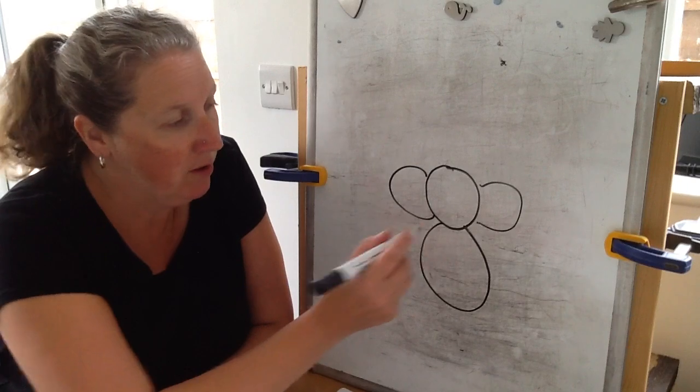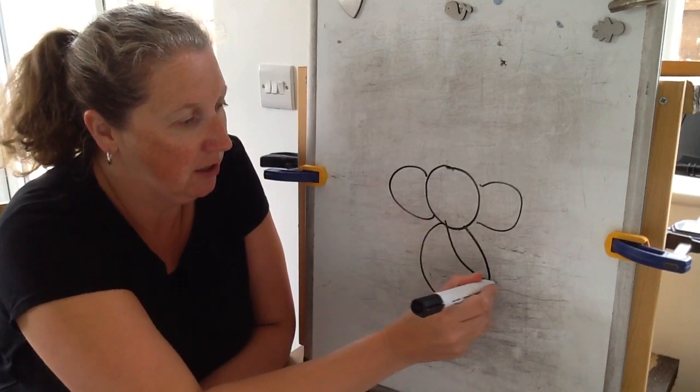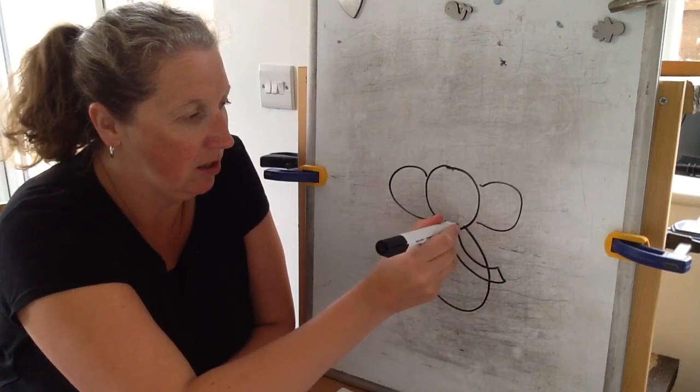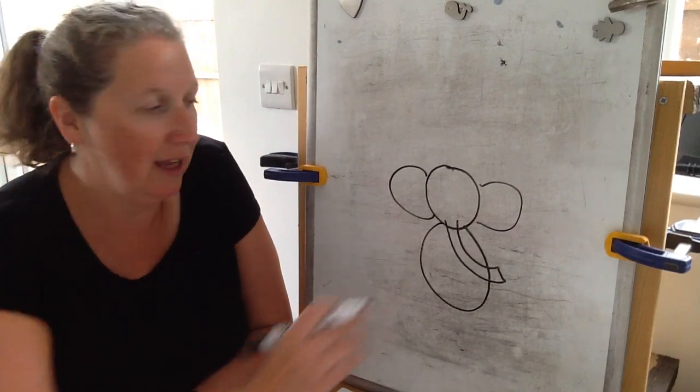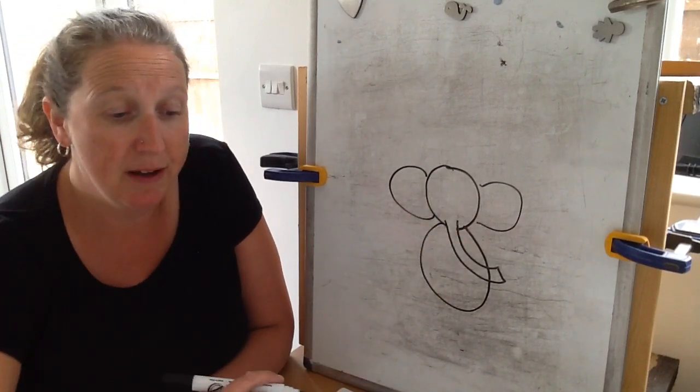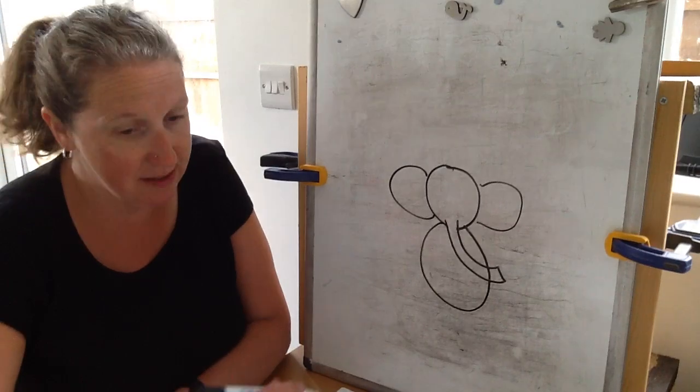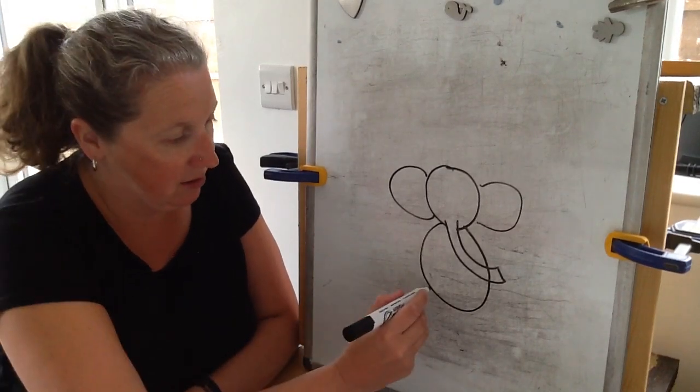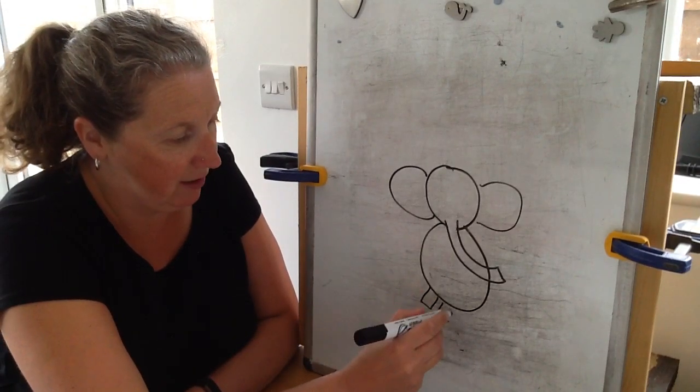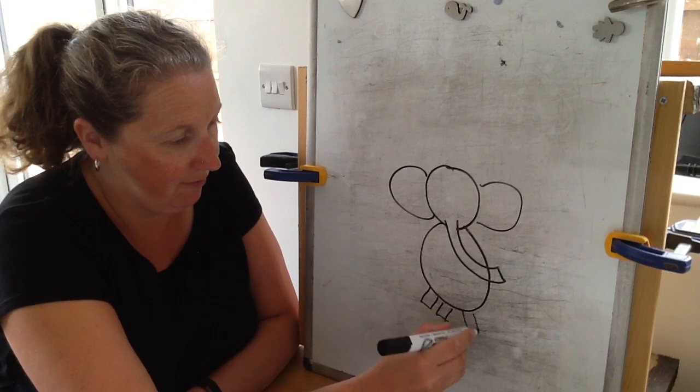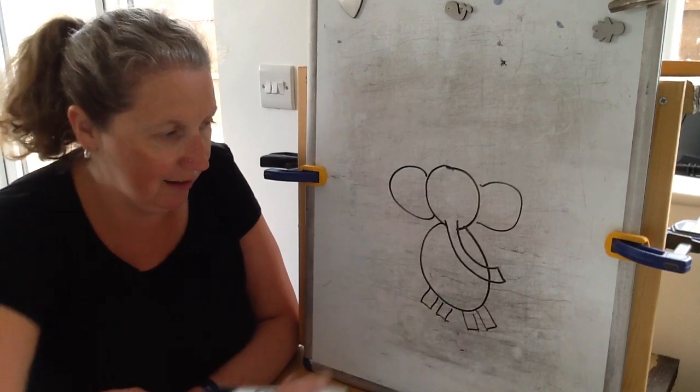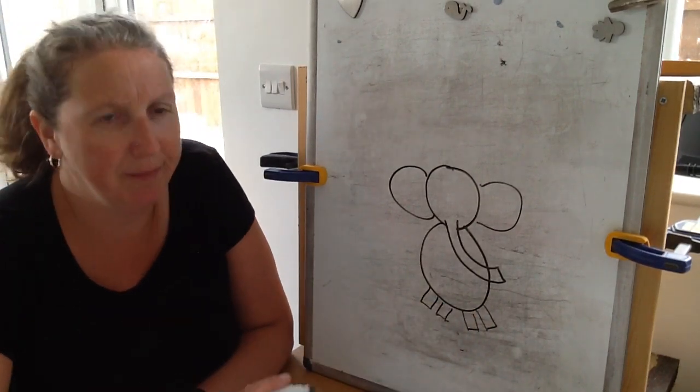Step four is that our elephant needs a trunk. Okay, there. Step five is that our elephant needs some legs. So elephants have four legs, so I'm going to give my elephant these legs here like that. It does look a bit funny, but fine.